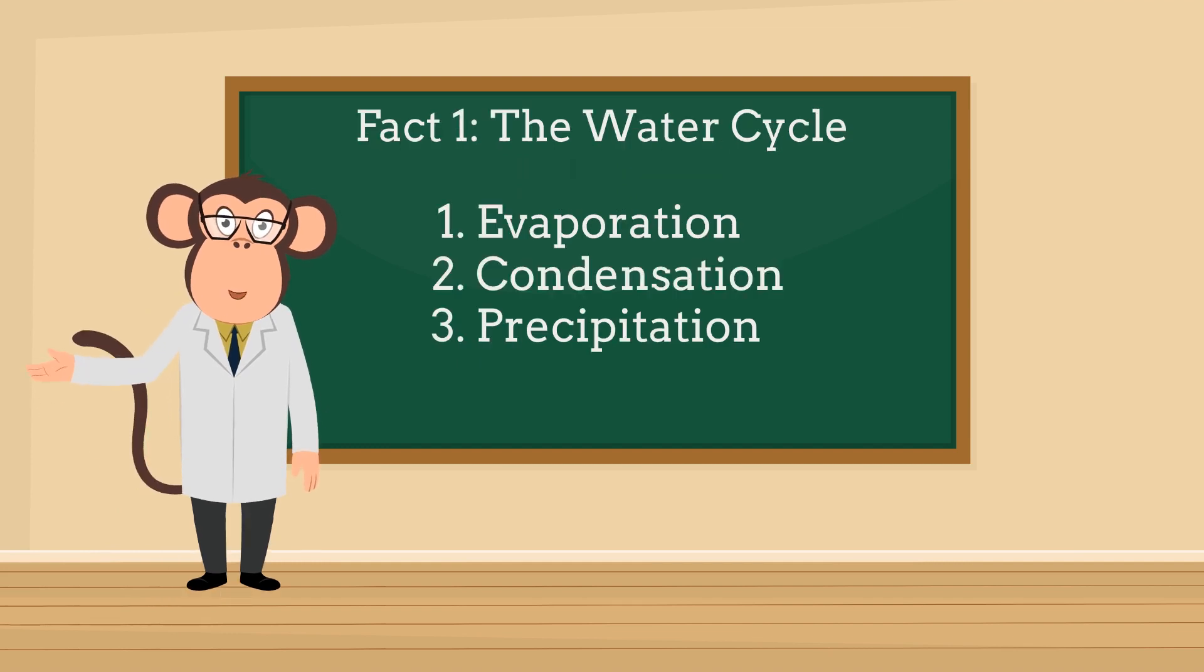Fact 1: The water cycle. Did you know that water is constantly on the move? It's like a never-ending dance. Let's break it down. Evaporation: When the sun shines, it makes water from oceans, rivers, and lakes turn into vapor. Condensation: The water vapor in the air cools down and forms tiny droplets, creating clouds. Precipitation: When those droplets join together, they fall as rain, snow, sleet, or hail. And the dance begins again.